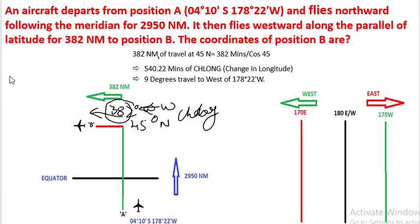So departure formula is: departure equals change in longitude times cosine of latitude. So change in longitude equals departure divided by cosine of latitude.